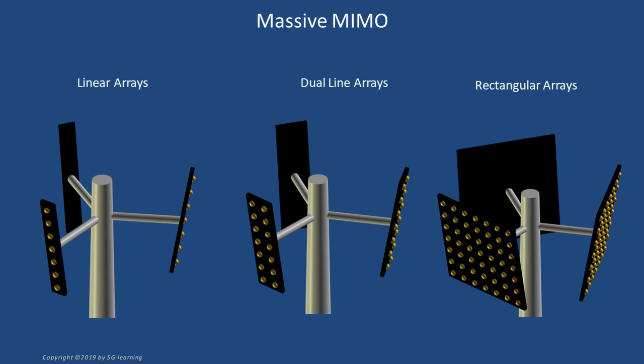In 5G, the 3GPP New Radio standard includes the possibility to deploy rectangular arrays with a large number of columns and rows. These arrays may support the simultaneous transmission and reception of many radio streams, a mechanism usually known as Massive MIMO. In this video, we will concentrate our attention on the design principles of these rectangular arrays.